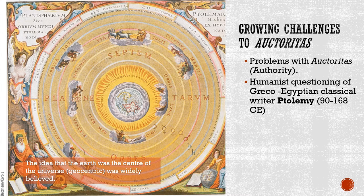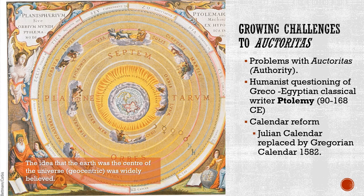Another problem was the calendar. The Julian calendar, established by Julius Caesar during the Roman period, was not perfectly accurate and fell out of sync over many years. Religious holidays like Easter and Christmas drifted from the seasons they were meant to align with, due to imprecise understanding of the solar year's length. In 1582, it was replaced by the improved Gregorian calendar. These challenges to old authority figures showed they could be wrong — and if wrong about some things, perhaps wrong about others.